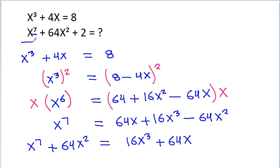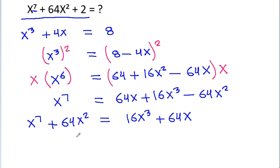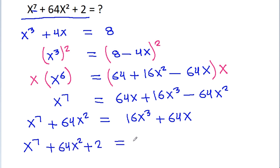And x power 7 plus 64x square will be equal to 16x cube minus 64x minus 2. So we have x power 7 plus 64x square plus 2. If we add 2 to both sides, then x power 7 plus 64x square plus 2 equals 16x cube minus 64x minus 2 plus 2, which gives 16x cube minus 64x.